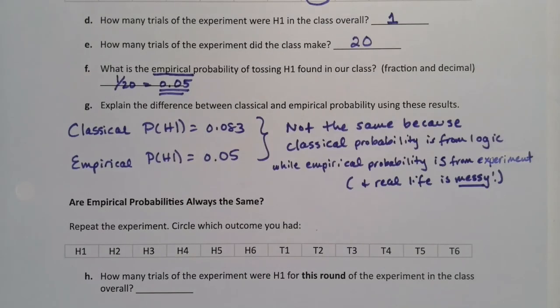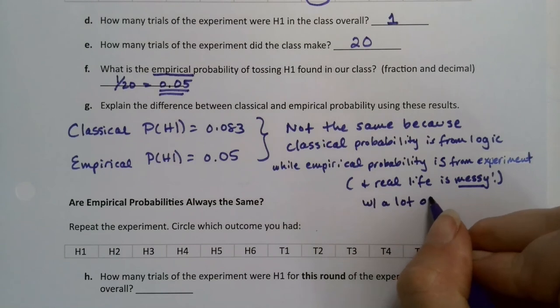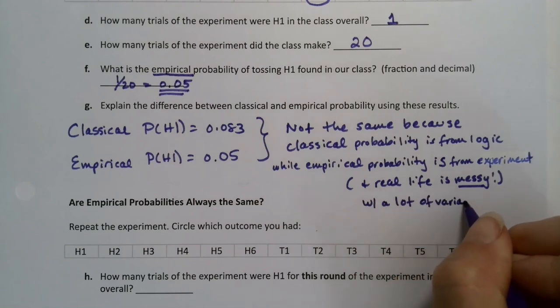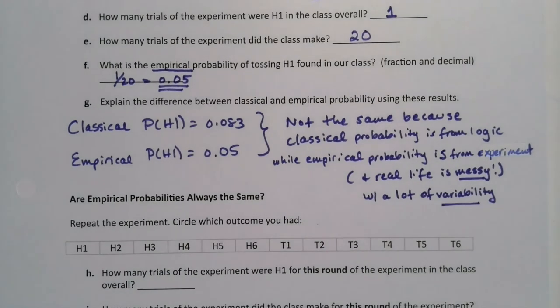And the empirical probability is 0.05. So why are they not the same? Well, they're not the same because classical's from logic and empirical's from experimental. And real life is messy. There. And I just wrote that up. So classical is from logic. Empirical probability is from an experiment. And real life is messy with a lot of variation—variability. Hence, the risk factor. That's why people like to gamble. They like to bet on that variation, on that variability.